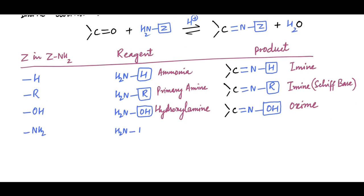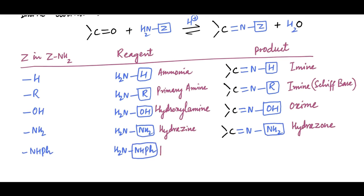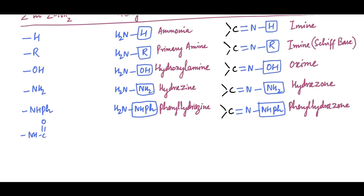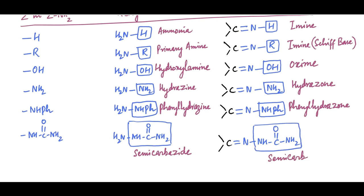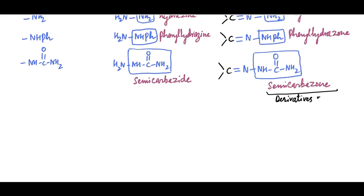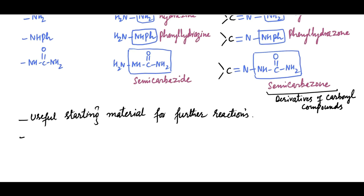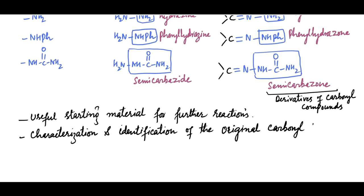If Z is NH2, reagent is called hydrazine, and the product is called hydrazone. If Z is phenyl-NH, reagent is called phenylhydrazine, and the product is called phenylhydrazone. If Z is NH-CO-NH2, reagent is called semicarbazide, and the product is called semicarbazone.